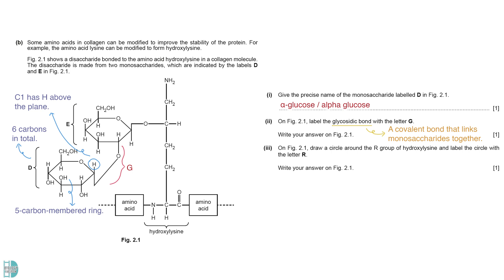To identify the R groups, we first need to locate the central carbon, which is situated between the amide and carboxyl group of the amino acid. The R group is found opposite the hydrogen atom.